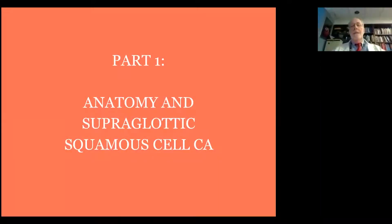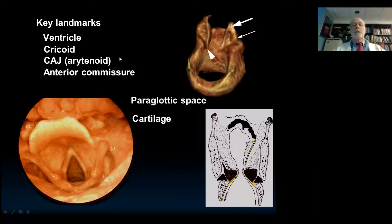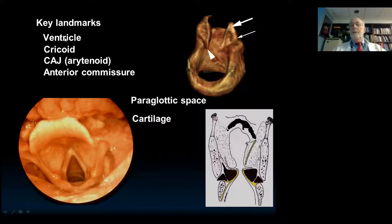Part one: anatomy — supraglottic squamous cell carcinoma. This is really a summary of most of the information we're going to talk about. These are the key landmarks; we describe everything particularly relative to the ventricle. The upper edge of the cricoid is the second most important landmark. The cricoarytenoid joint is also important, particularly if you're doing endoscopic surgery.